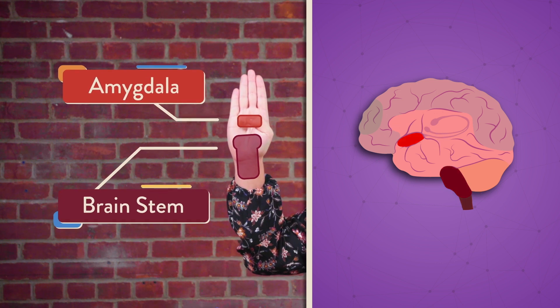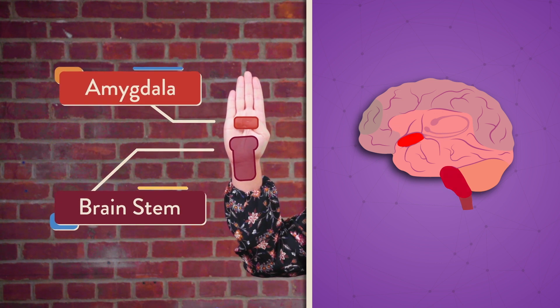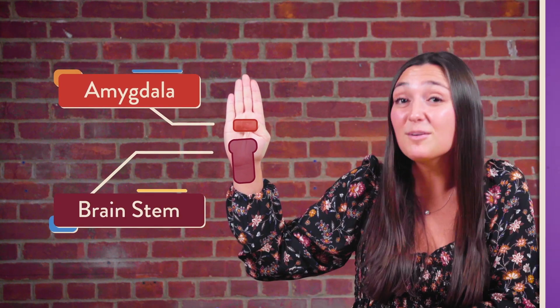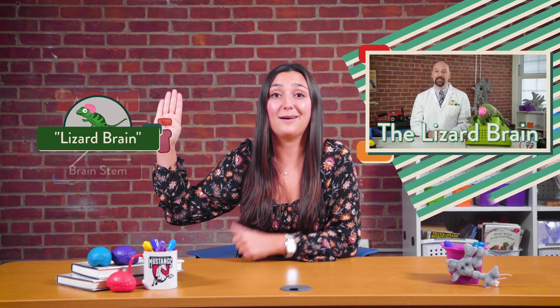are some of the earliest parts of our brain to develop, and sometimes get the nickname of lizard brain. You'll learn a little bit more about that with Dr. Nagler. But for now, let's keep going with our hand model.